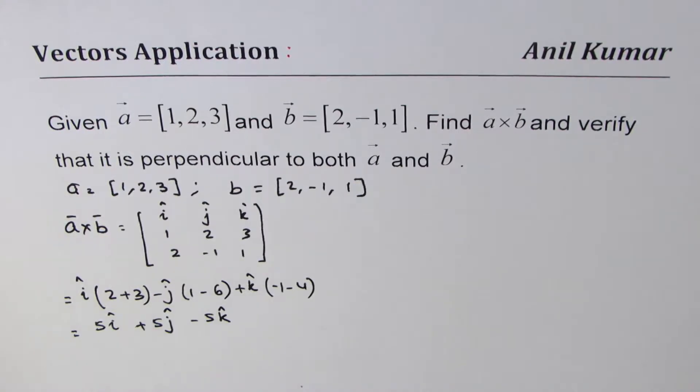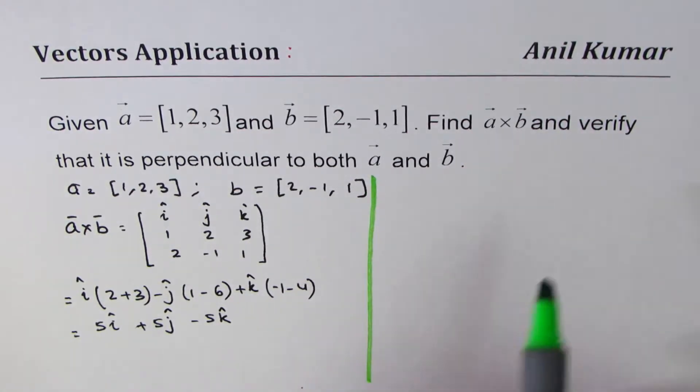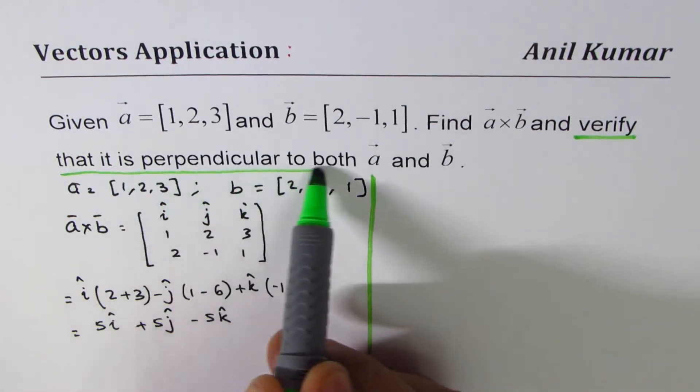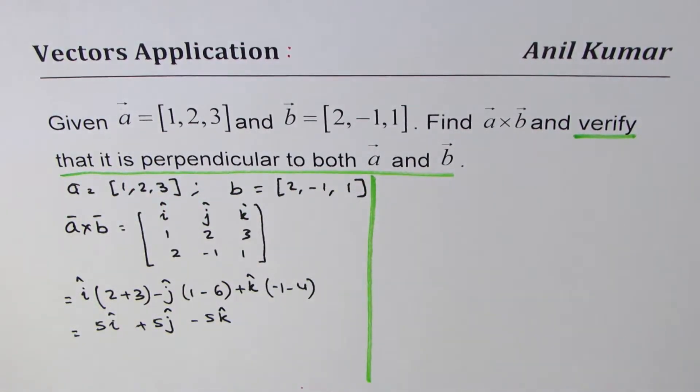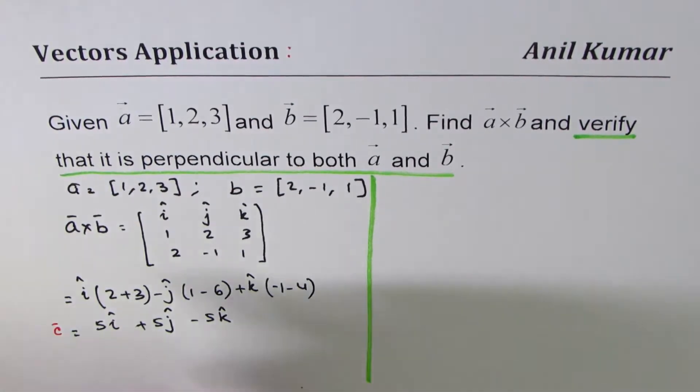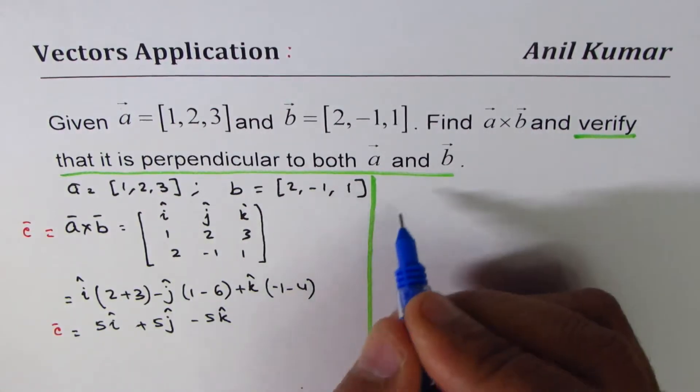So that becomes a×b. That's the vector. Now the second part of this question is we have to verify that it is perpendicular to both. So let me call this vector c, equal to a×b. So now we will verify.